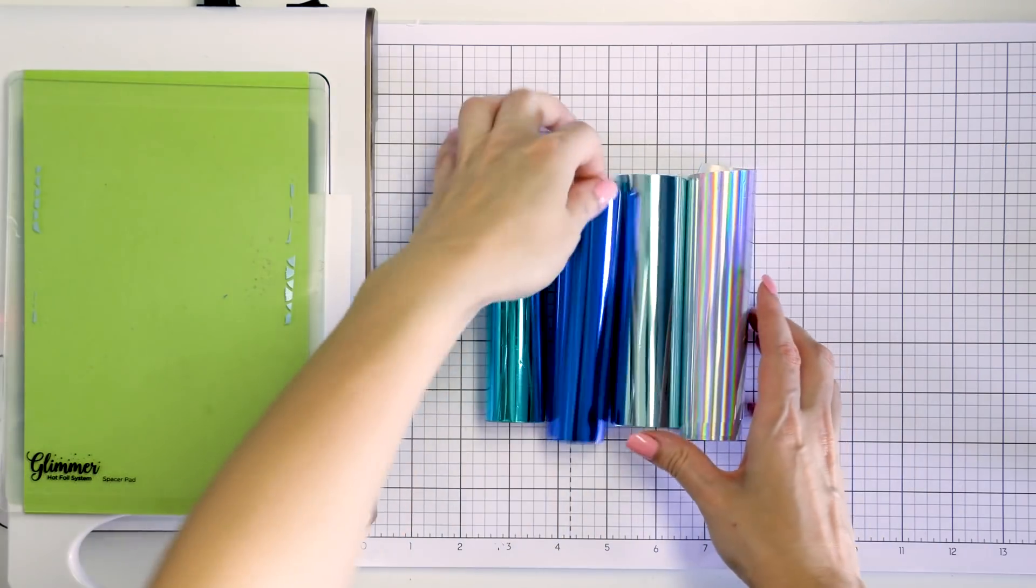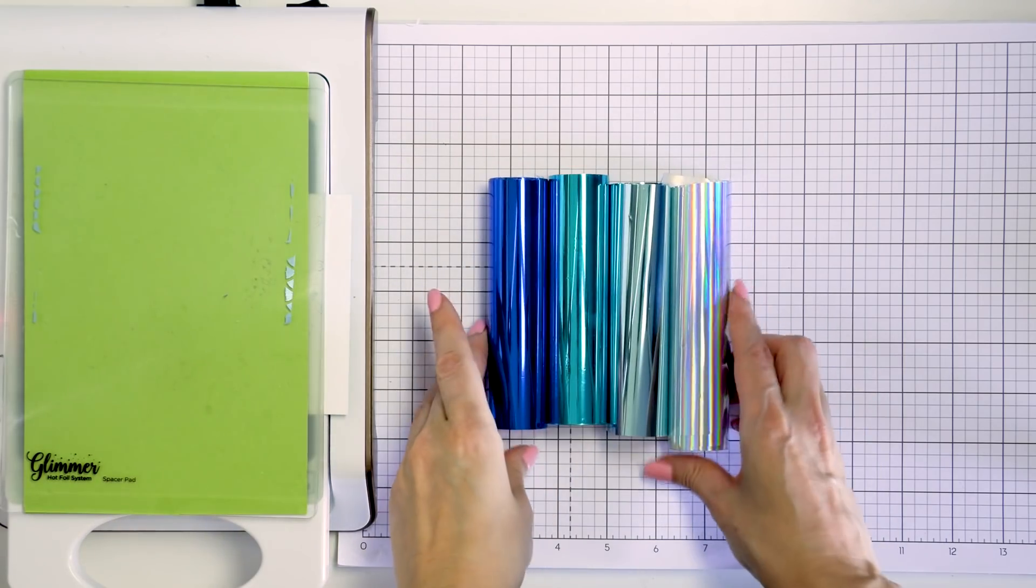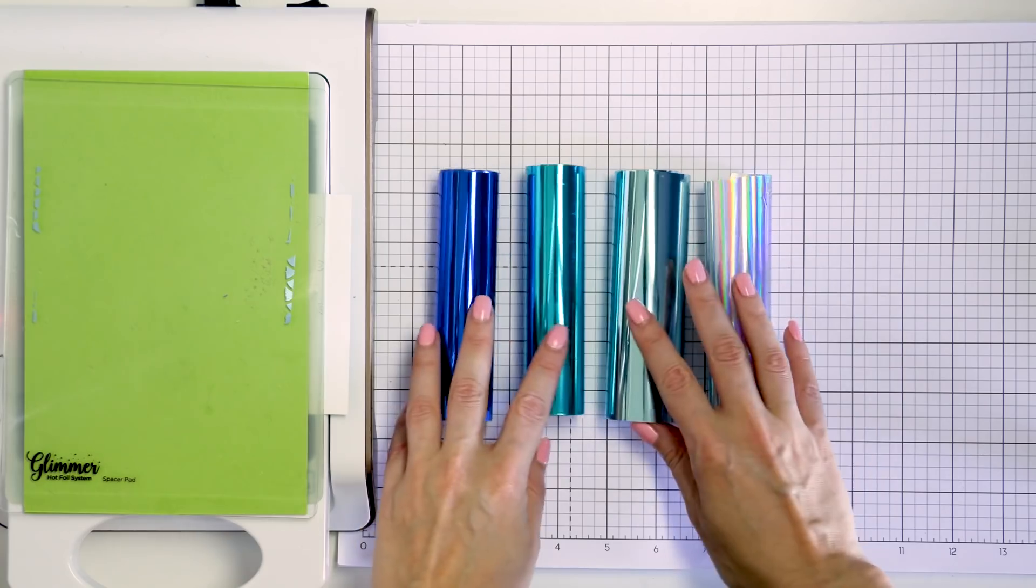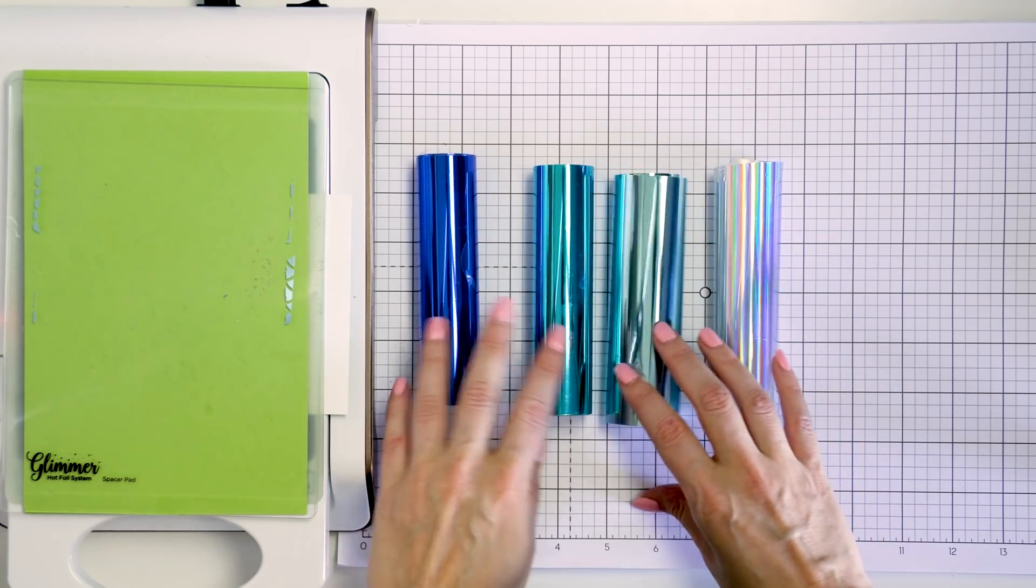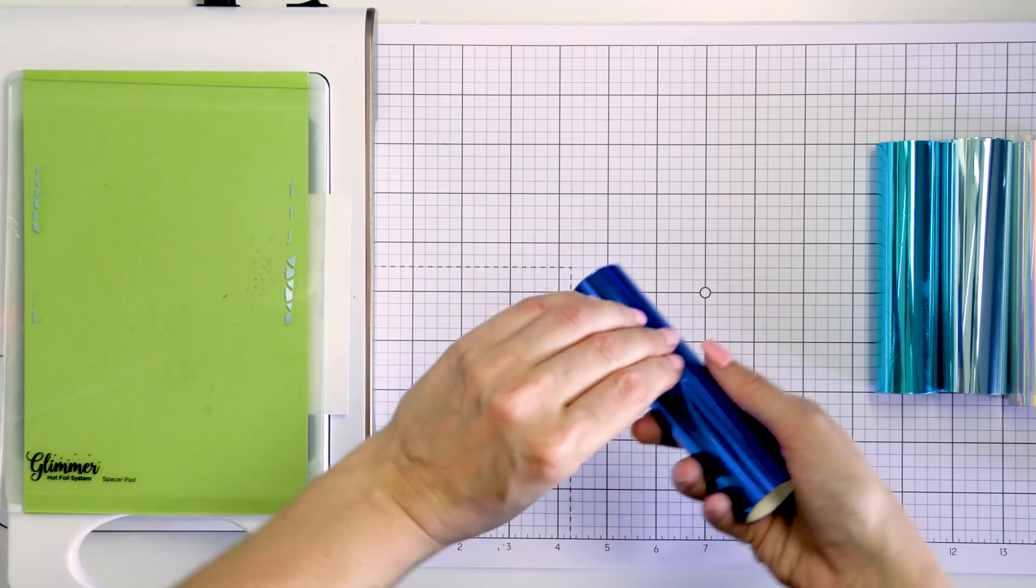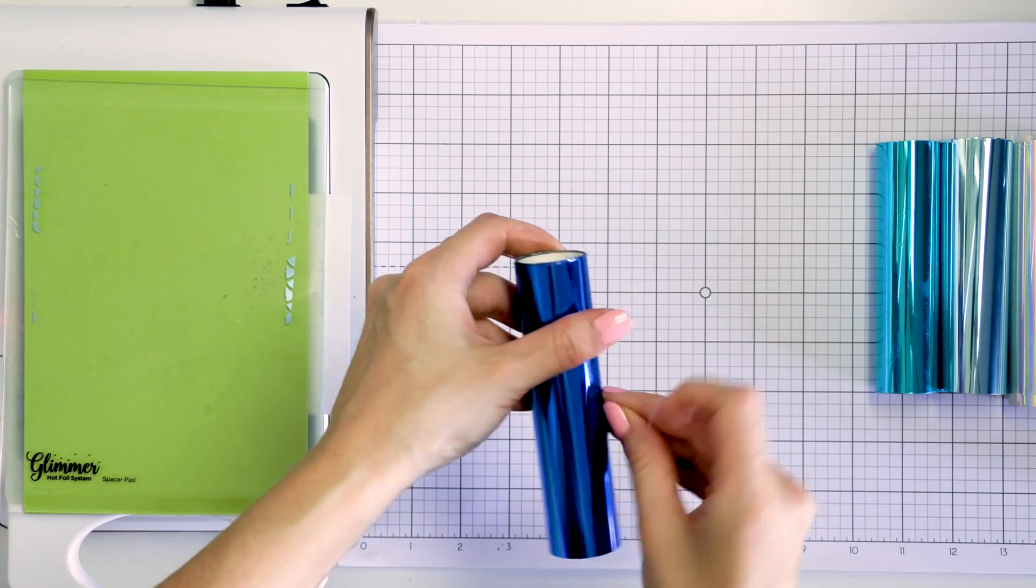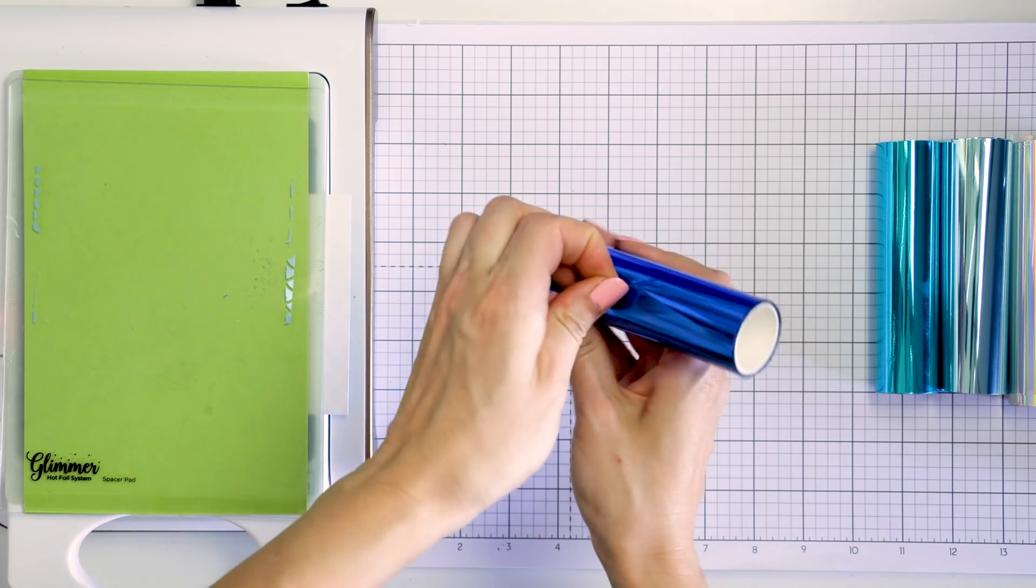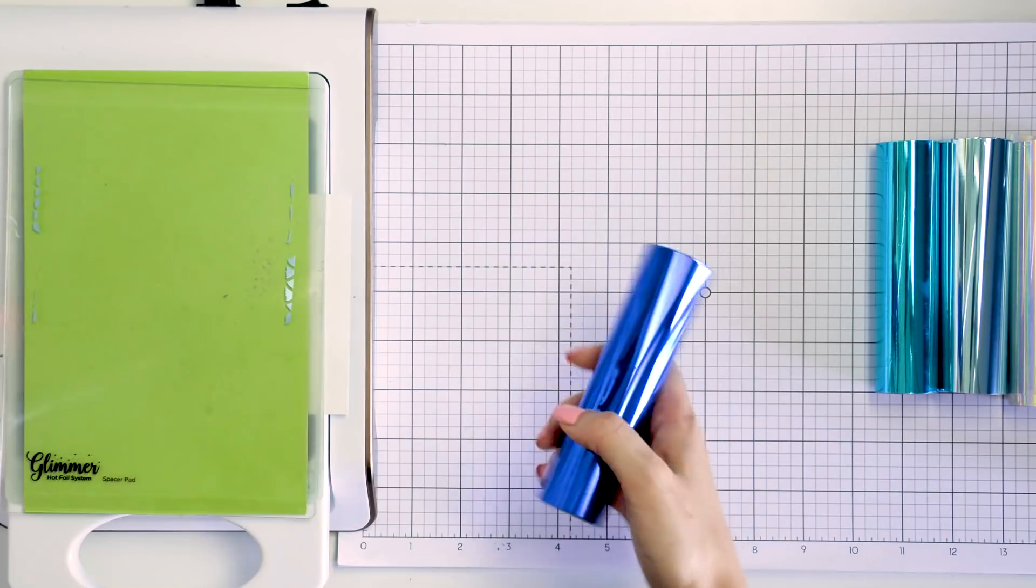While the plate is heating up for the last time to foil the background I went ahead and picked up a few other colors of foil to create another background but an ombre foiled background this time. Luckily there are lots of foil colors out there these days. Just remember that minc foils will not work for this. That's a different technology. Just use what you have.